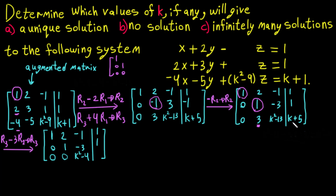For the last entry of R3: K plus 5 minus 3 times 1 equals K plus 5 minus 3, which gives K plus 2. So the bottom row now reads: 0, 0, K squared minus 4, K plus 2.